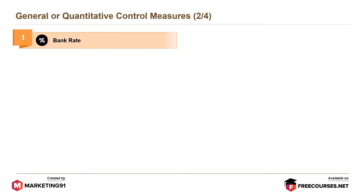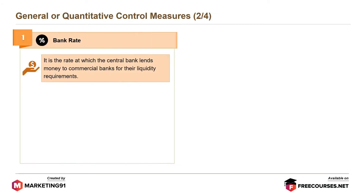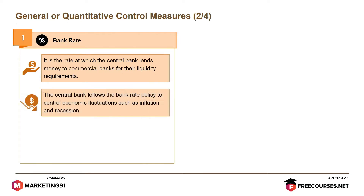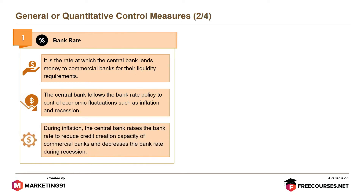First is the bank rate. It is the rate at which the central bank lends money to commercial banks for their liquidity requirements. The central bank follows the bank rate policy to control economic fluctuations such as inflation and recession. During inflation, the central bank raises the bank rate to reduce the credit creation capacity of commercial banks.